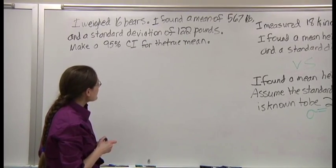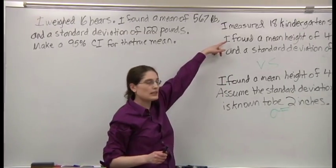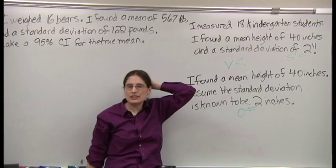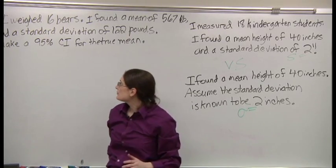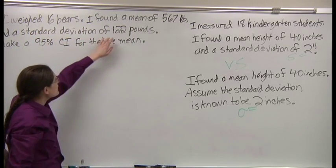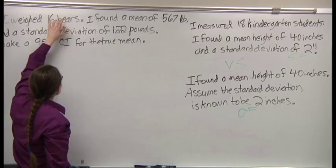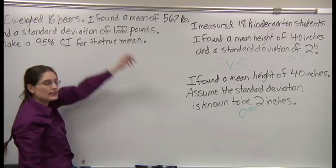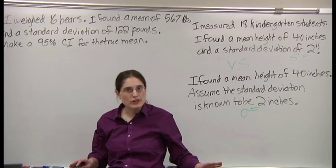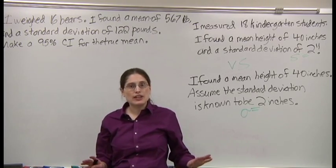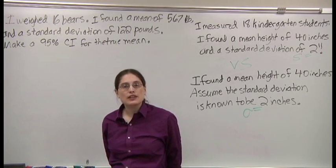Make a 95% confidence interval for the true mean. So, is this going to be a Z or a T? Where does the standard deviation come from? That's what matters. Standard deviation of 122, it refers to these 16 bears. I'm not assuming the standard deviation of all bears. I don't know the standard deviation of all bears. I just know the standard deviation of the 16 bears that I found.